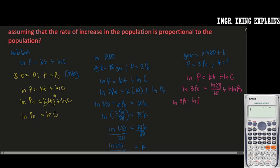We have ln 3P0 minus ln P0 is equal to ln 2 over 20 times T. This will be equal to ln 3P0 over P0 is equal to ln 2 over 20 times T.